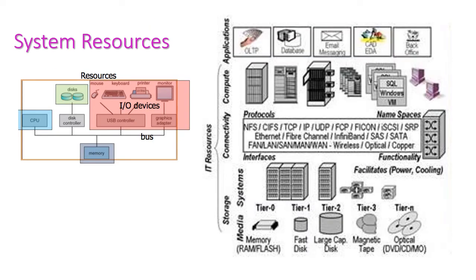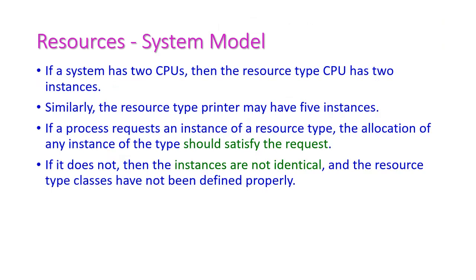Here are examples of resources: disk, mouse, keyboard, printer, monitors, scanners, disk controllers, CPUs, graphical devices, and network bus — everything comes under system resources. Now let us see resource instances. If the system has two CPUs, then the resource type CPU has two instances. Similarly, a printer may have five instances.